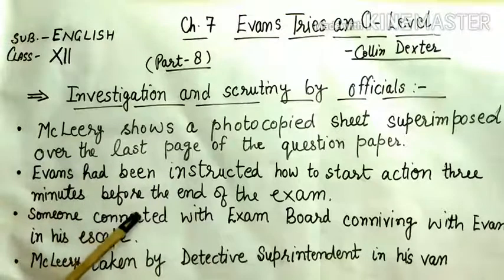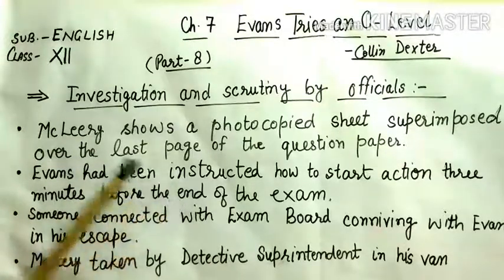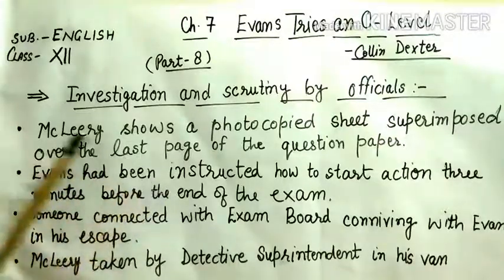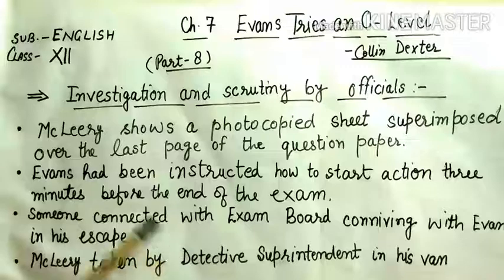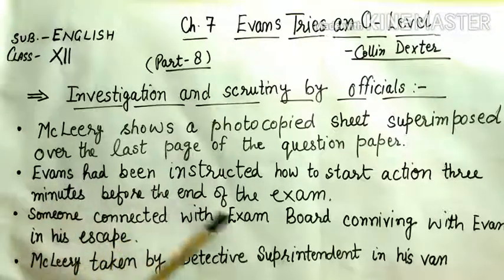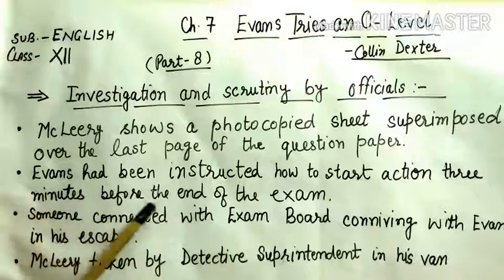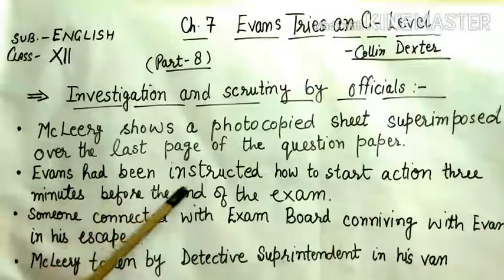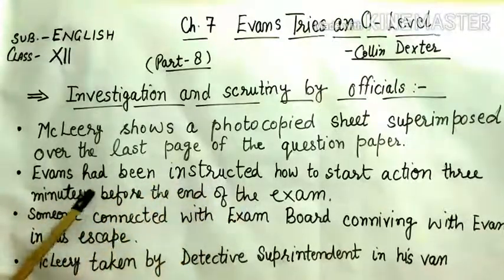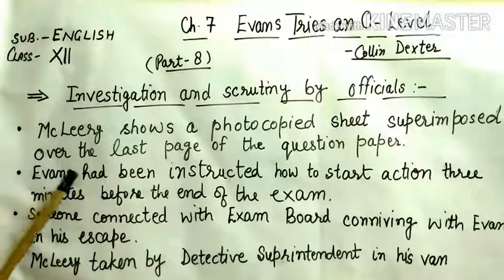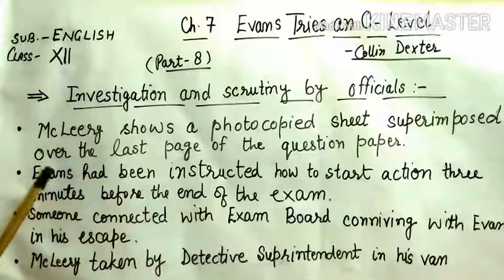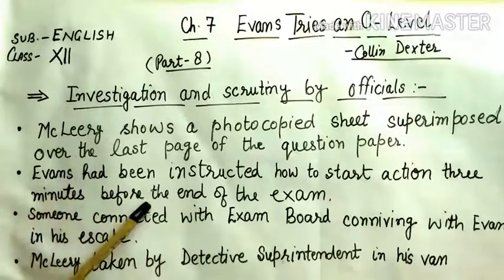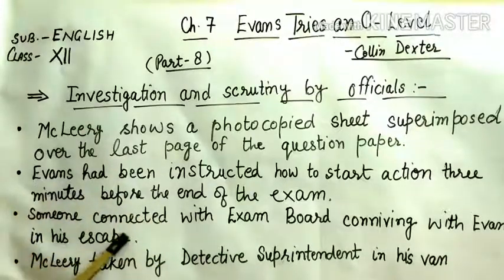It instructed Evans to adhere to the plan strictly and not to hit McLeary too hard. It said that the 3 minutes before the examinations were very important. These were the hidden instructions for Evans so that he could run away from the prison very easily. He was also instructed not to overdo the Scottish accent.